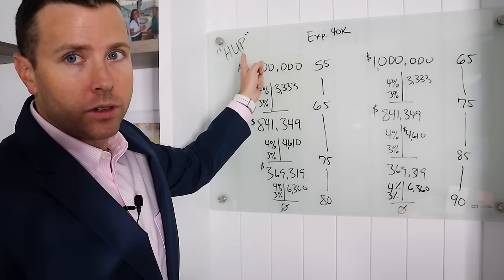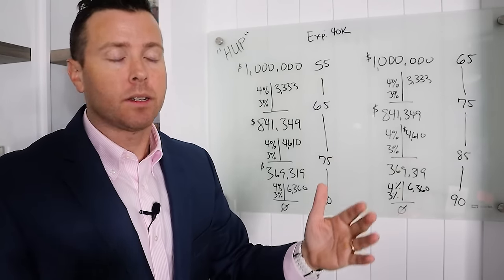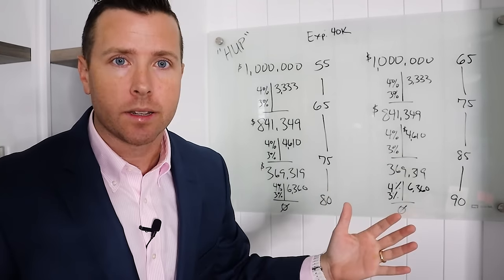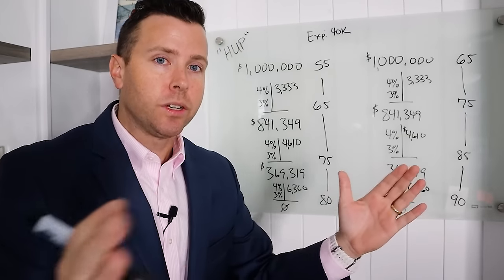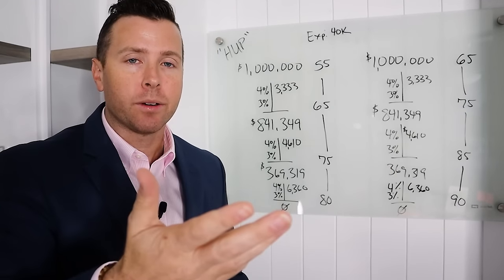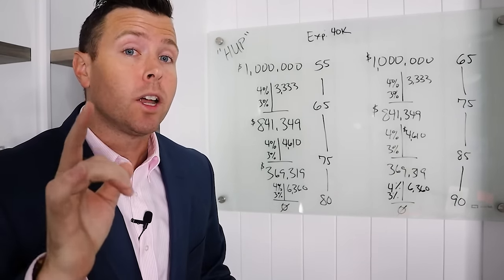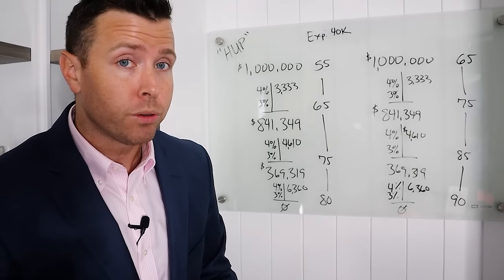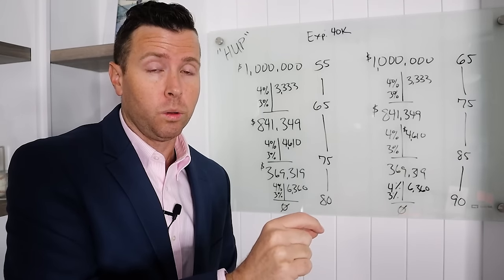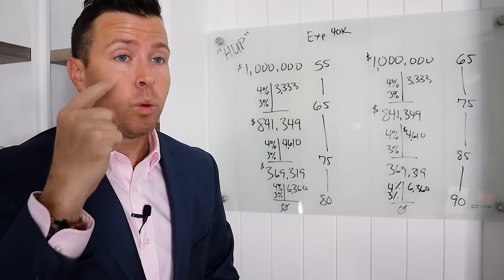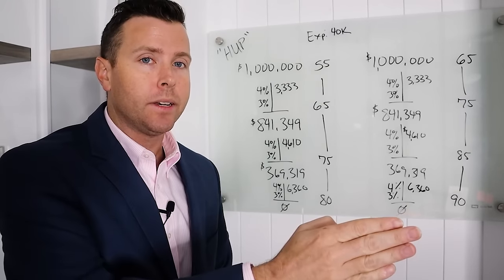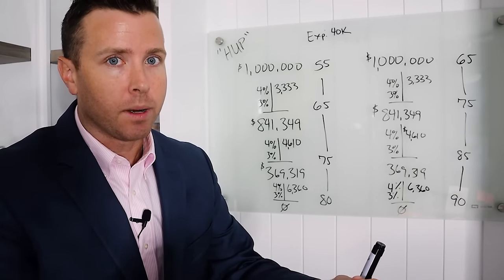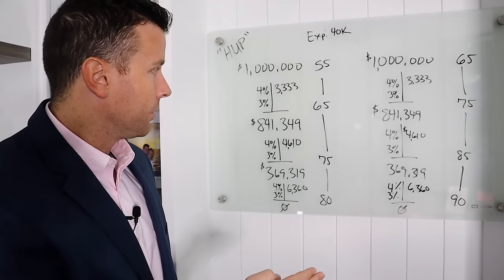I call this the hub approach, the hub, H-U-P. I'm from Kentucky, so my P's and my B's all sound the same. Hear, understand, produce. Jesus told the parable about the man who scattered seed. And he said, the seed that fell on good soil produced 30, 60, and a hundred fold. We want to hear, we want to understand, and then we apply this to our retirement income strategy and we produce a good outcome. Hear, understand, produce.